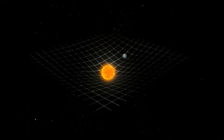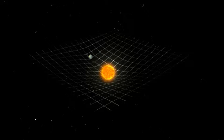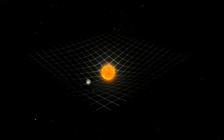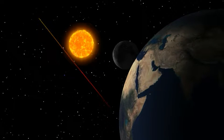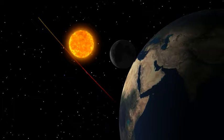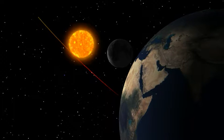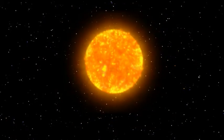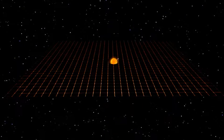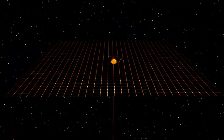We know mass distorts space. We know light is affected by gravity. And we know Einstein's theory of general relativity makes possible one of the strangest objects ever imagined by physicists. If you could create a large enough distortion in space-time, by placing enough mass in a small enough space,